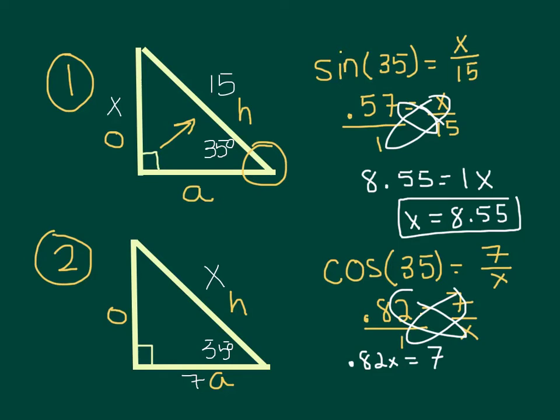Now I have to do an extra step and divide both sides by 0.82. So X equals 7 divided by 0.82, which is 8.54. Oddly that came out very similar to the first example, though it was not supposed to.